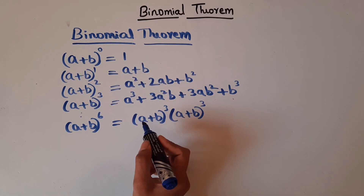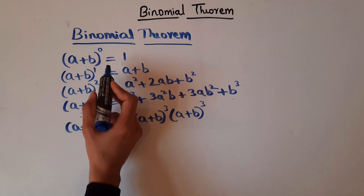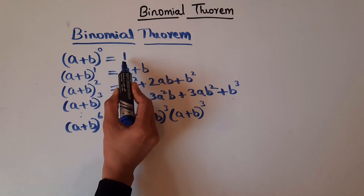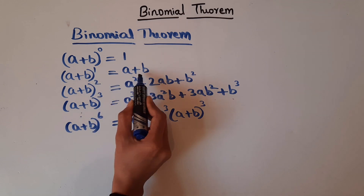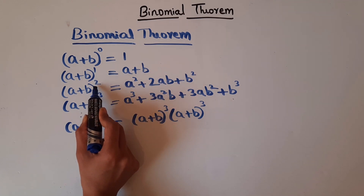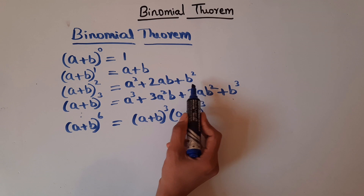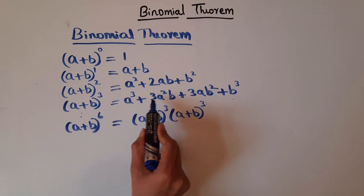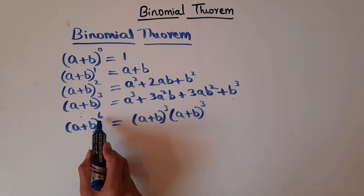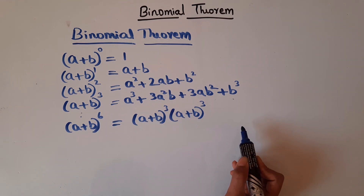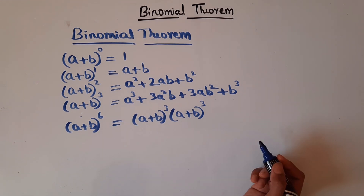If you see these, can you see any pattern? If the power is 0, I got 1 term. If I have power 1, I have 2 terms. If I have power 2, I have 3 terms. If I have power 3, I have 4 terms. So if I have power 6, there must be 7 terms. That is one observation.